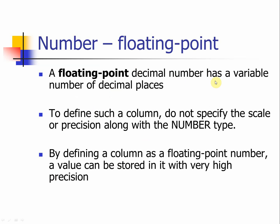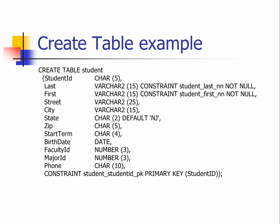A floating point decimal number has a variable number of decimal places. To define such a column — say for scientific calculations that can go pretty large — when we don't really want to specify precision and scale but still want to hold a number, we can simply use NUMBER without any parentheses. This will be a floating point number and a value can be stored with very high precision, though the speed and space will not be optimal.